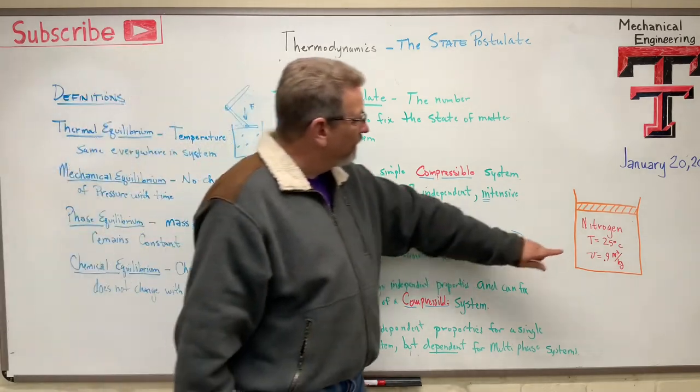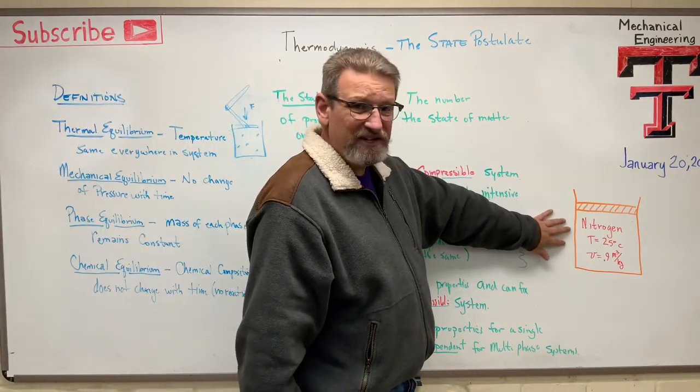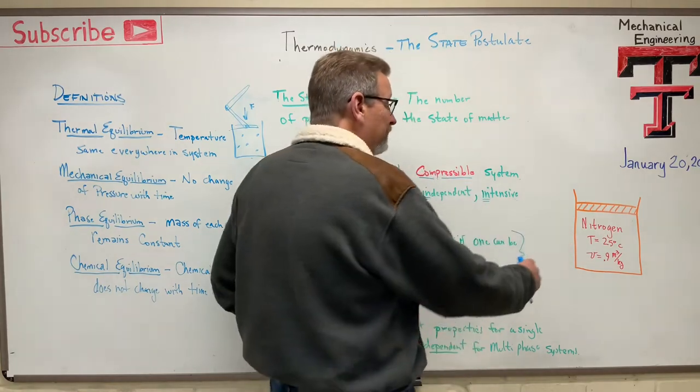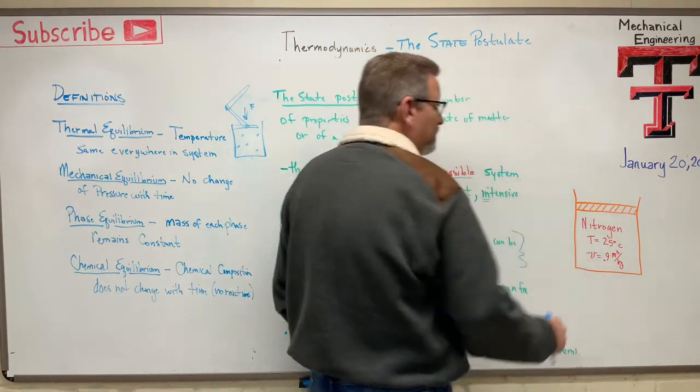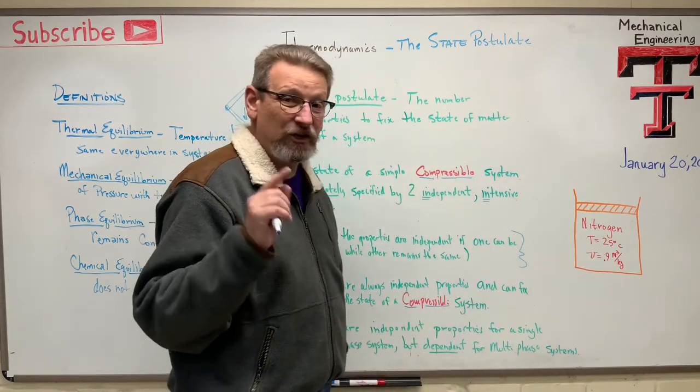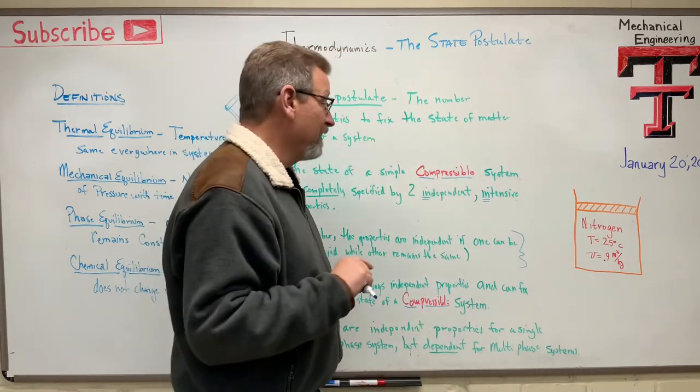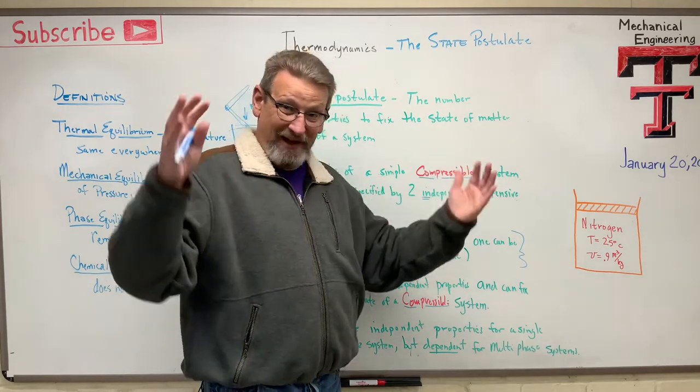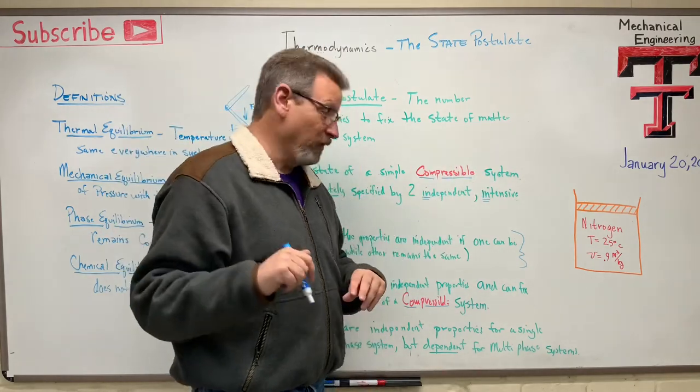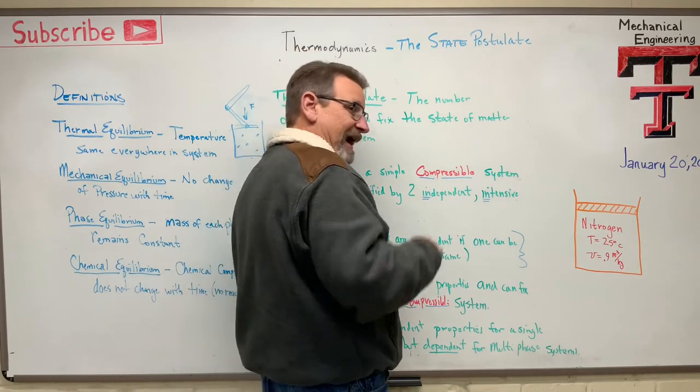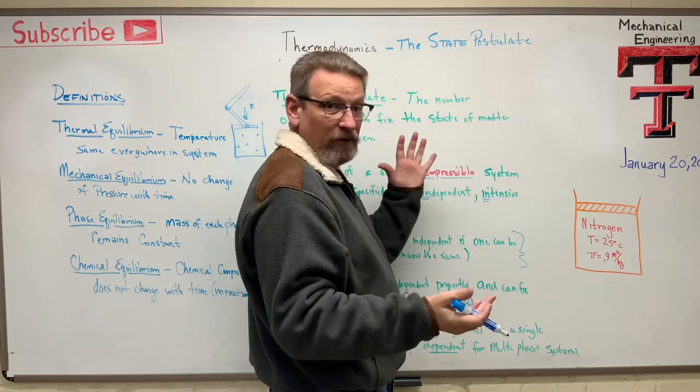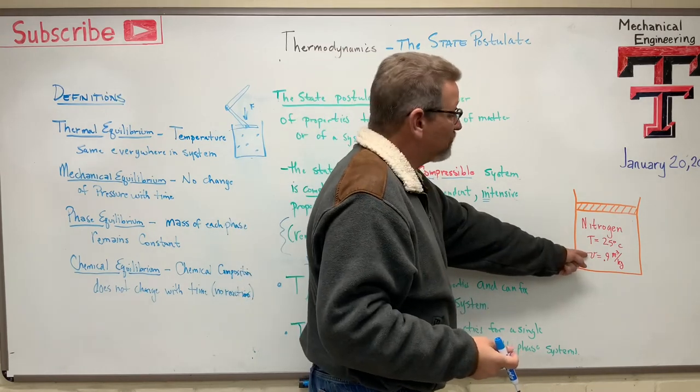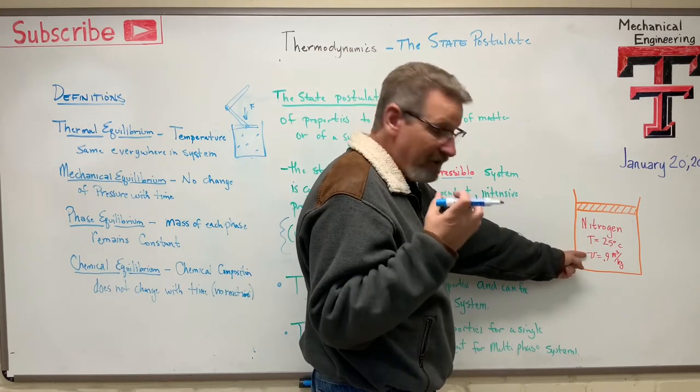So temperature and specific volume. Let's look at this system over here. Here's a system. What is the state of that system? Well, they tell us the temperature is 25 degrees C, and the specific volume is 0.9 cubic meters per kilogram. So every kilogram of nitrogen takes up 0.9 cubic meters of volume. Add another kilogram, get another 0.9 cubic meters. That's what I mean. That's specific volume or per unit volume.